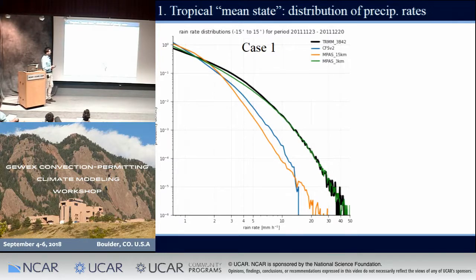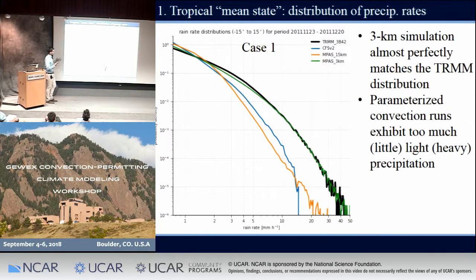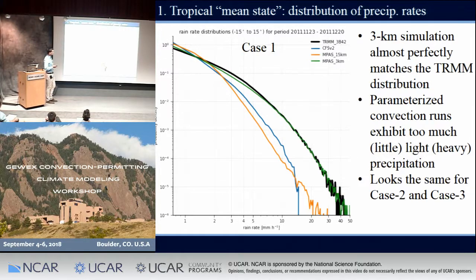Another way of showing this is a rain rate distribution on a log-log scale, where black is TRMM and green is our 3-kilometer MPAS — which matches TRMM pretty well. Our other two models, as already outlined, have too much too-frequent light precipitation and then too little heavy precipitation. The same pattern holds in cases 2 and 3.